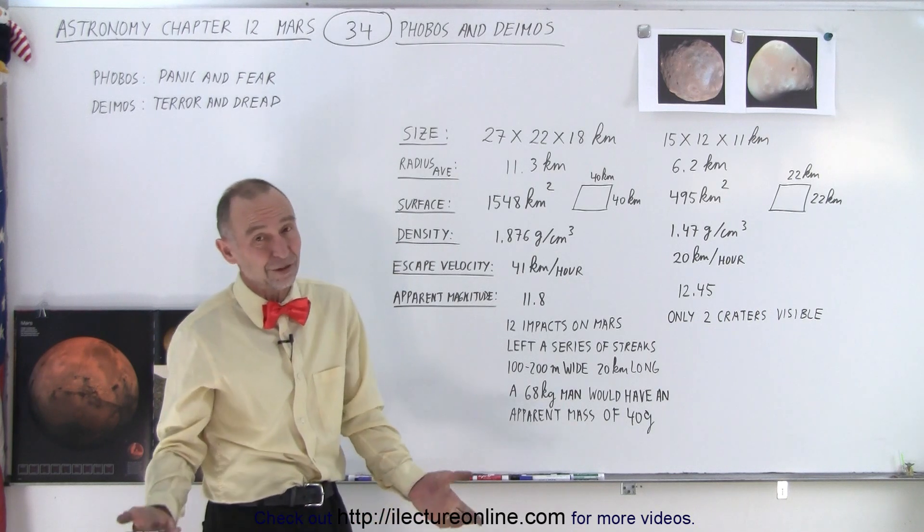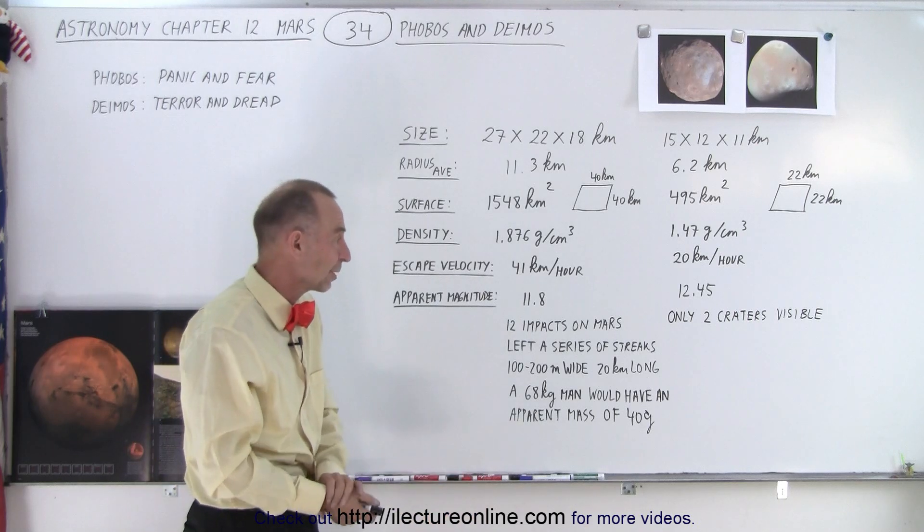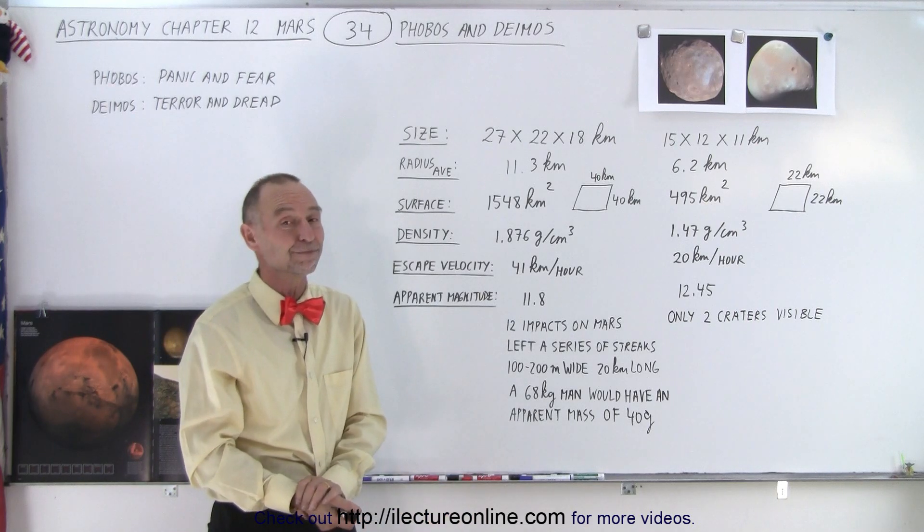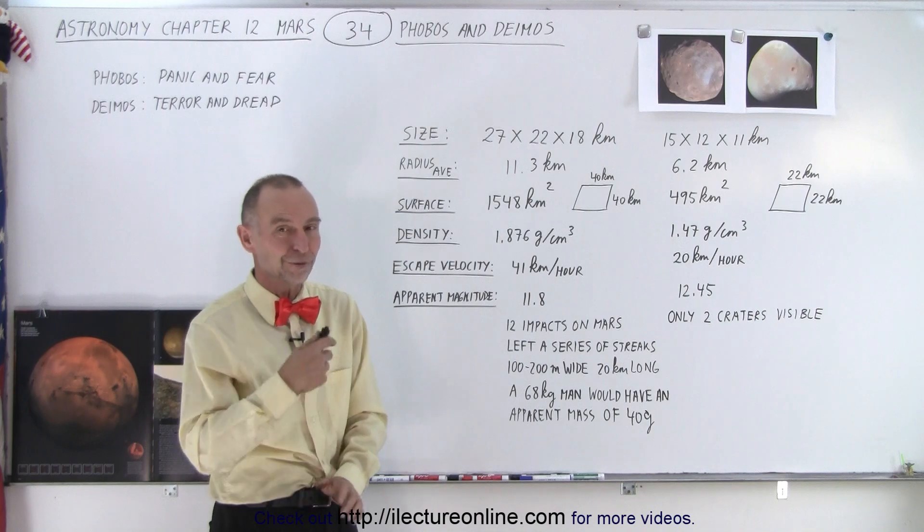That gives you some very interesting information about those two moons. Again, they're essentially asteroids that were captured by the gravitational attraction of Mars. And that's the story for Phobos and Deimos.